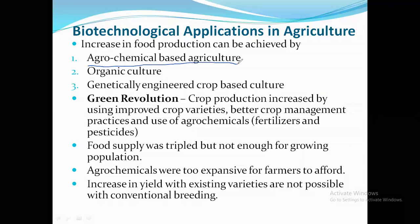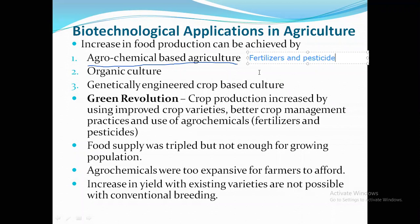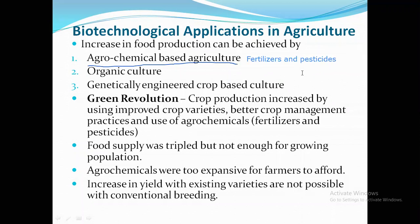Agrochemical-based agriculture is basically based on the use of chemical fertilizers and pesticides. With these chemical fertilizers and pesticides, we have increased the production of crops. This method started around 50-60 years back.